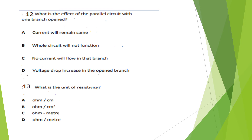Question 12: What is the effect on a parallel circuit with one branch opened? Options: current will remain the same, whole circuit will not function, no current will flow in that branch, voltage drop increases in the opened branch. The answer is Option C — no current will flow in that branch.